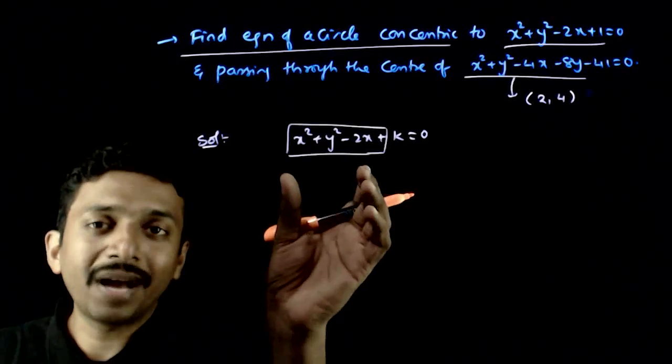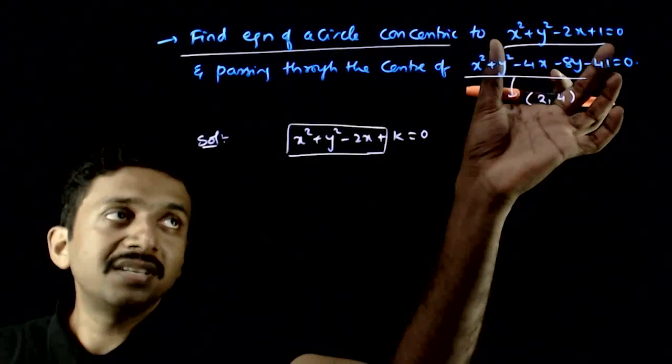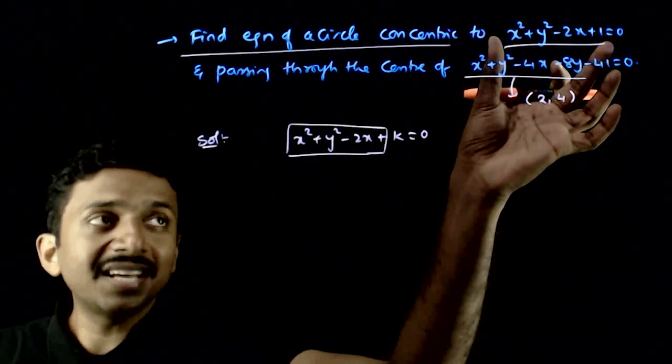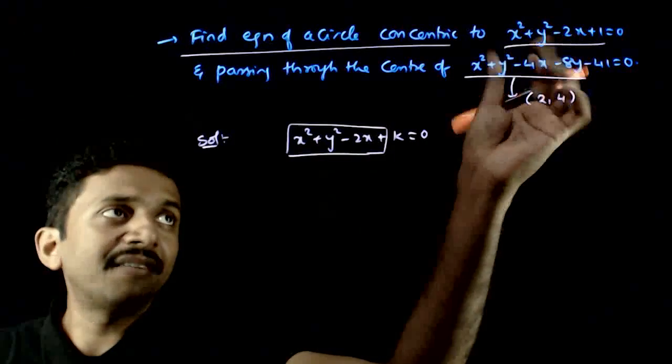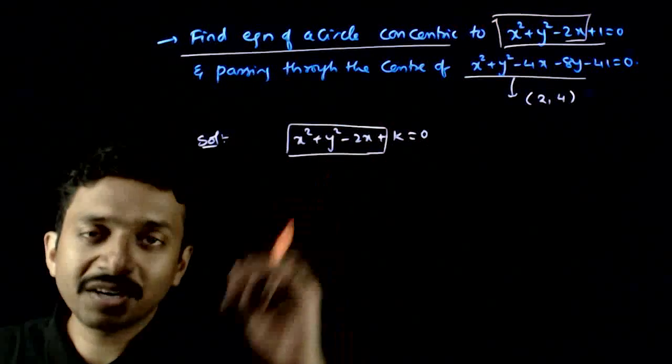So if this is the equation of a circle, any circle concentric to this circle will have this part unchanged. So only the last part can change.